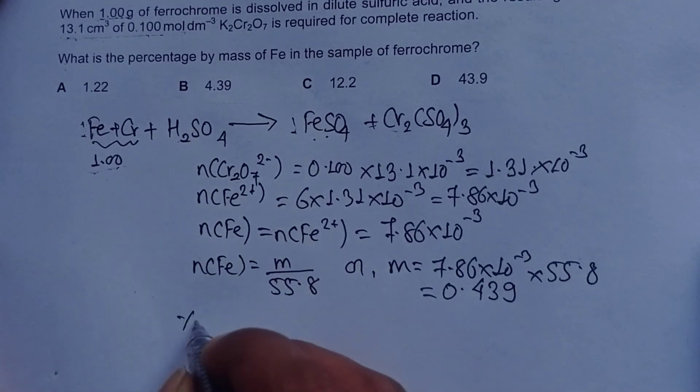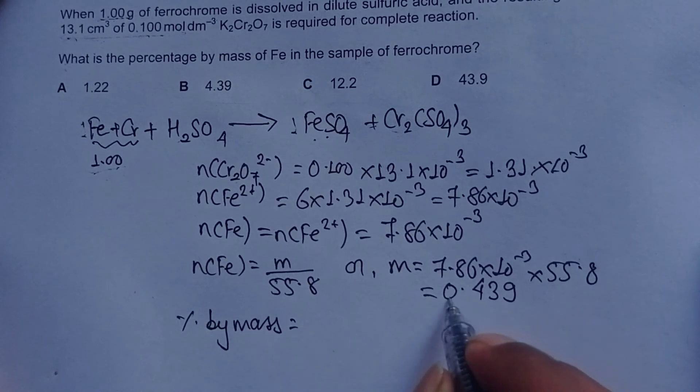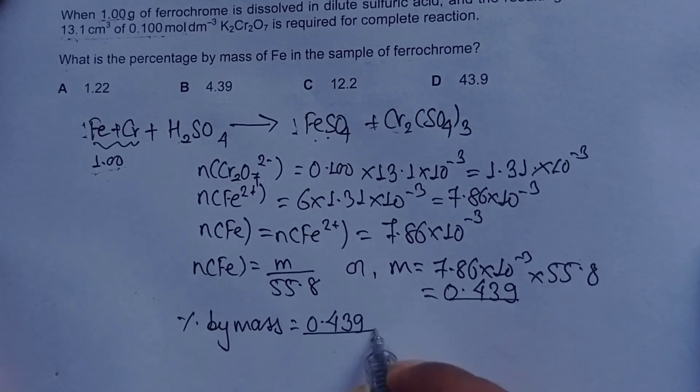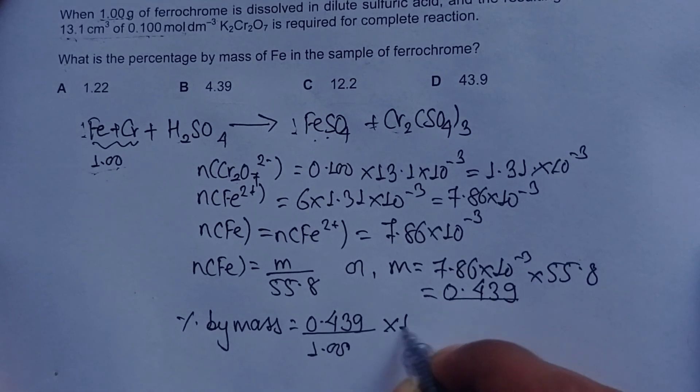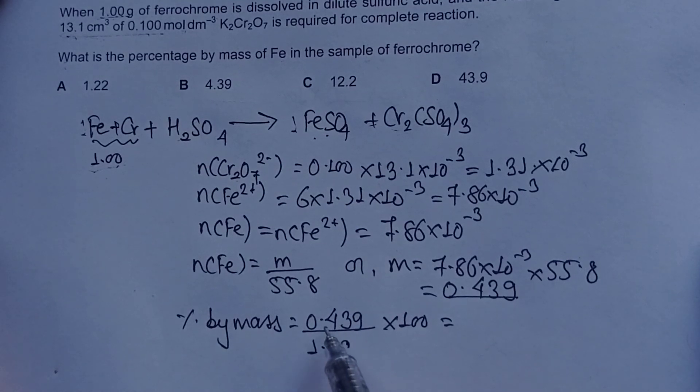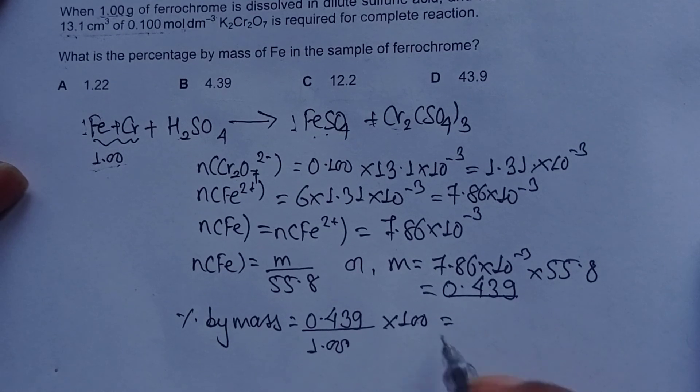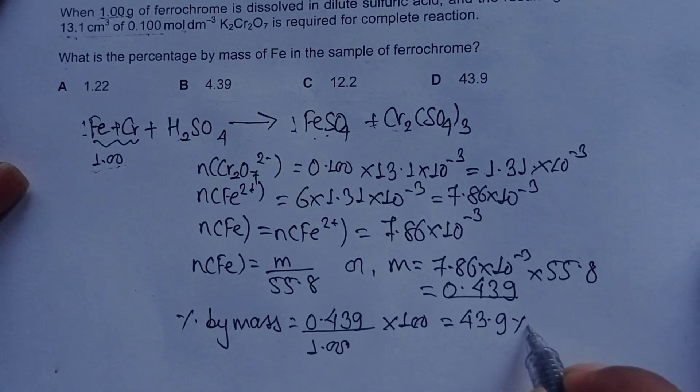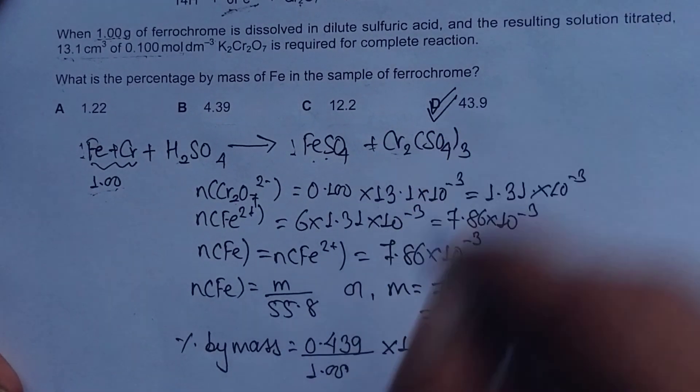Now the percentage by mass of iron is: this is the mass of iron, the total mass of ferrochrome is 1 gram. To calculate the percentage, we multiply by 100. 0.439 / 1 × 100 = 43.9%. Looking at our answer choices, option D is our correct answer.